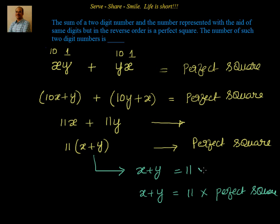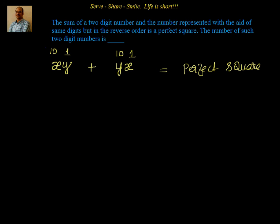So we will pick the option x plus y equal to 11 — meaning the sum of the digits x and y should equal 11. Now we have to see what combinations we can have where x and y values add up to 11.